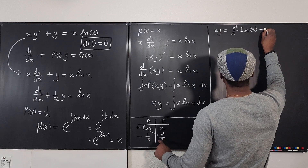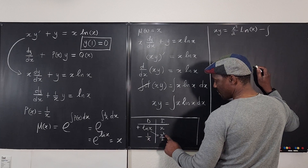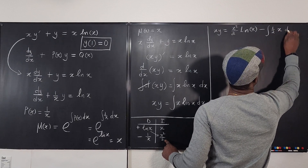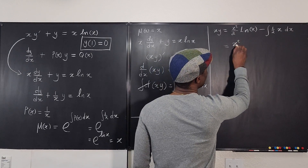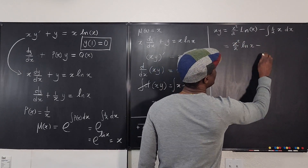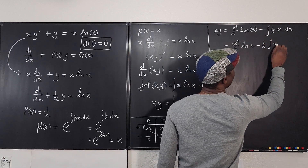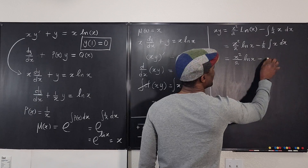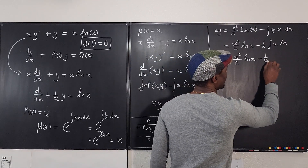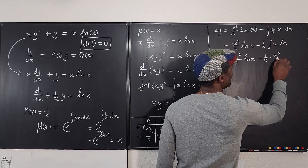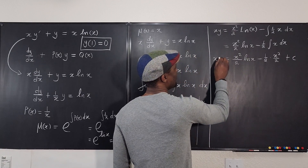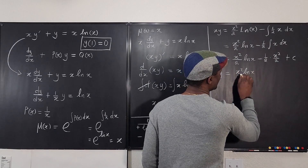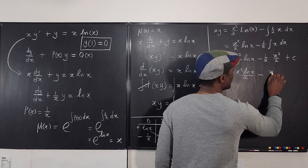Continuing, we have x-squared over two times ln(x) minus one-half times the integral of x dx. That integral gives x-squared over two, so the final result is x-squared over two times ln(x) minus x-squared over four, plus C. Therefore, xy equals x-squared·ln(x) over two minus x-squared over four plus C.